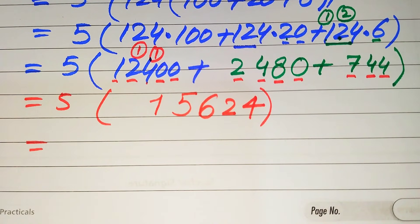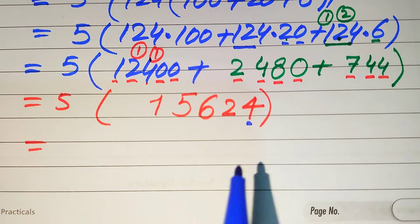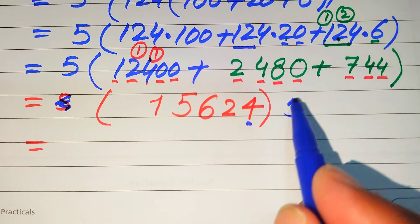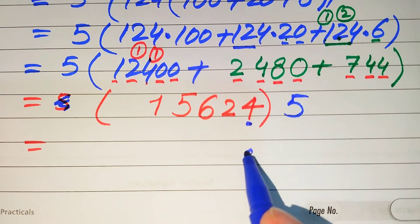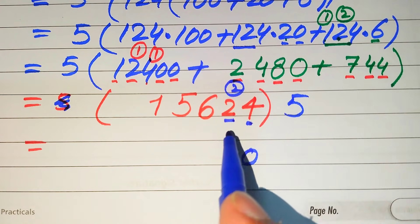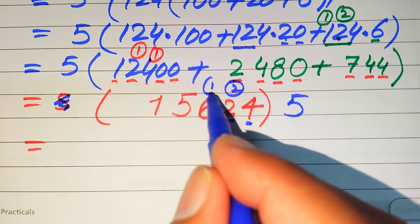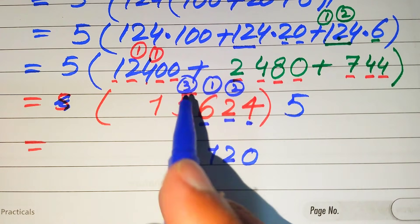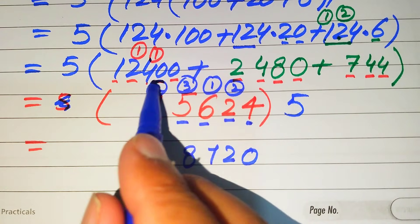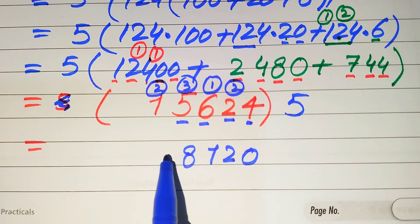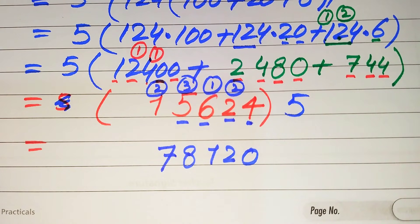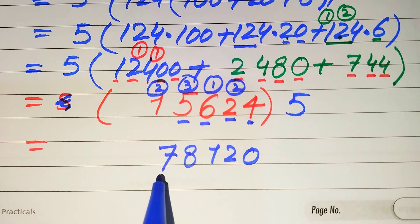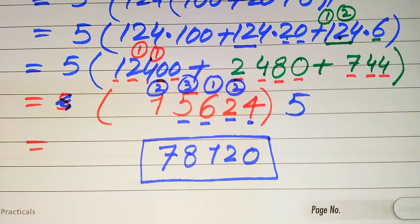Finally, we multiply 15,624 by 5: 5 times 4 is 20, write 0 carry 2; 5 times 2 is 10, plus 2 is 12, write 2 carry 1; 5 times 6 is 30, plus 1 is 31, write 1 carry 3; 5 times 5 is 25, plus 3 is 28, write 8 carry 2; 5 times 1 is 5, plus 2 is 7. So the final simplified answer is 78,120. Thank you for watching — please subscribe for more exciting videos.